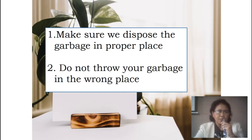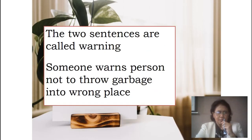Look at these two sentences: 'Make sure we dispose of the garbage in the proper place' and 'Do not throw your garbage in the wrong place.' These two sentences are called a warning — someone warns a person not to throw garbage in the wrong place.